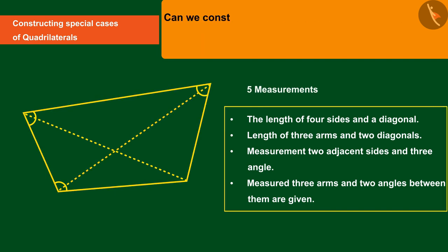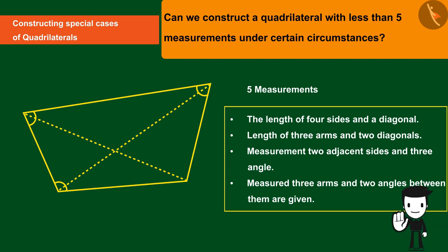Can we construct a quadrilateral with less than five measurements under certain circumstances? Let's discuss this.